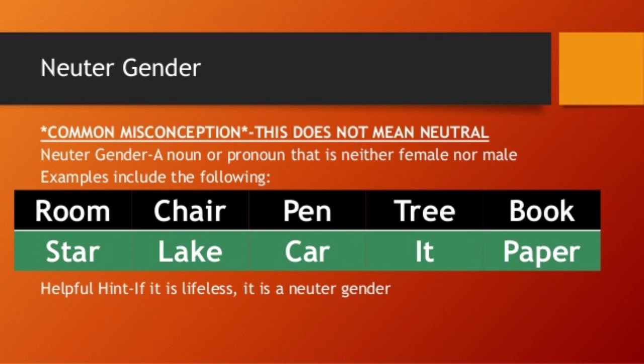We call these neuter gender because we cannot differentiate whether a pen is male or female. All non-living things come under this category. Other examples include laptop, computer, hard drive, and mobile — all of these come under neuter gender.